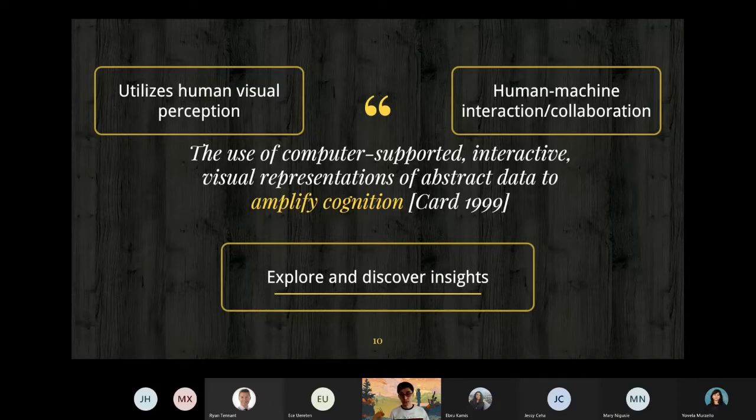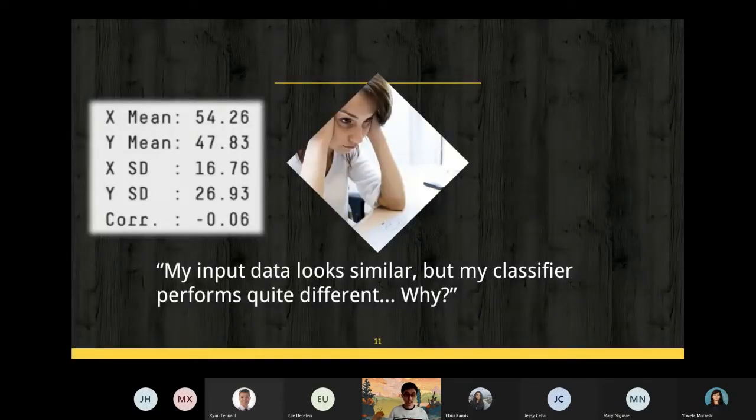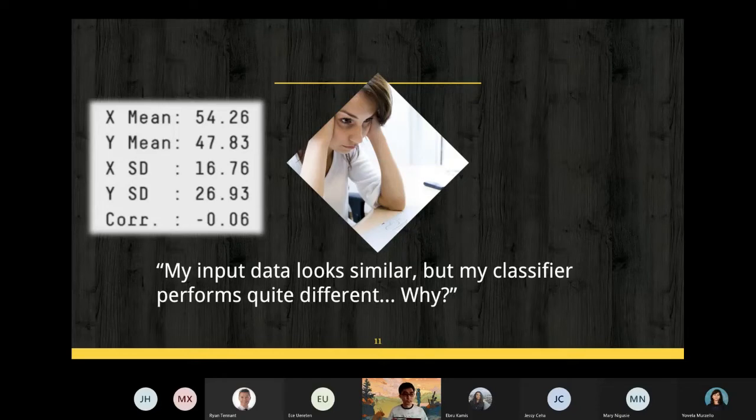Let me give you some concrete examples. I have a friend whose name is Mary and she's a data scientist at an IT company. One day she found me, she said, I have a problem. My input data looks very similar, but my classifier performed dramatically different. I don't know why. By input data looking similar, she means a lot of stats like mean, standard deviations, correlations look exactly the same. So I said, why don't you visualize your data? Let's plot them.